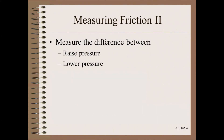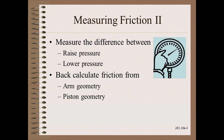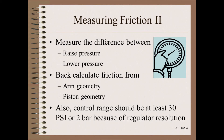The second method is simpler for measurement because we will use what is probably already an existing pressure gauge. Analogously, we measure the difference between the raise and lower pressure with the web off and the machine stopped. The harder part here is we need to back-calculate friction from arm and piston geometry. This is simple enough for most engineers. One last consideration is that the total control range from minimum to maximum tension should be at least 30 PSI or 2 bar. The reason is because the regulator control pressure is seldom much better than a tenth of that.